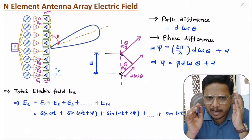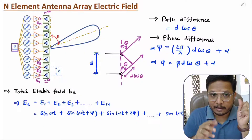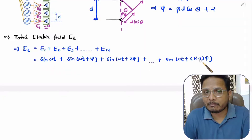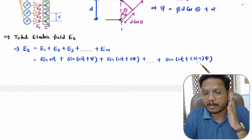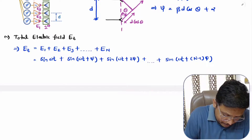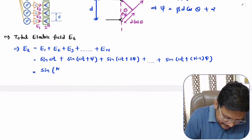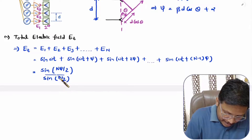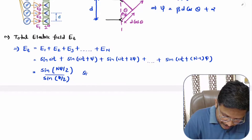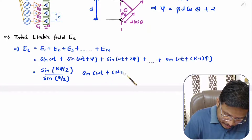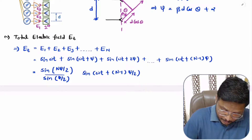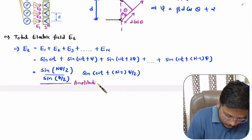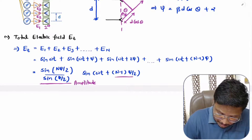So, now we have the value of phase ψ between two consecutive elements. The total electric field is the algebraic sum of all element fields. This total electric field can be simplified in the form of amplitude and phase. The amplitude will be sin(nψ/2) divided by sin(ψ/2), and the total electric field is that amplitude multiplied by sine(ωt + (n−1)ψ/2), where the second term represents the phase.